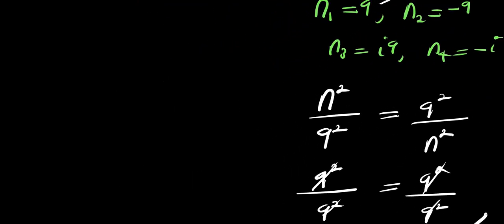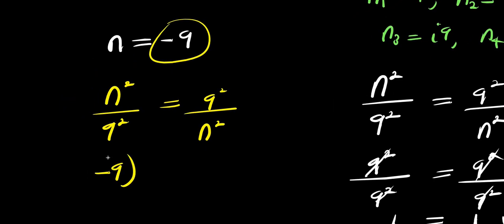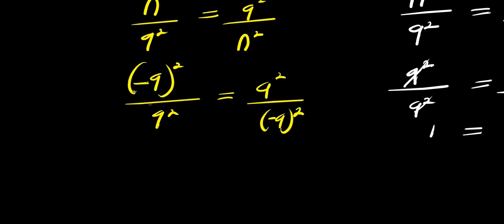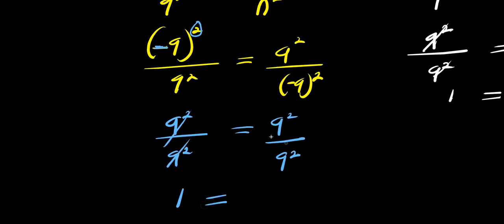Now let's check when n equals negative 9. We substitute negative 9 into n power 2 divided by 9 power 2 equals 9 power 2 divided by n power 2. We get negative 9 raised to the power of 2, divided by 9 power 2. Since a negative raised to an even power is positive, this becomes 9 power 2 divided by 9 power 2 equals 1, and the right side also equals 1. Left-hand side equals right-hand side, so this is also correct.